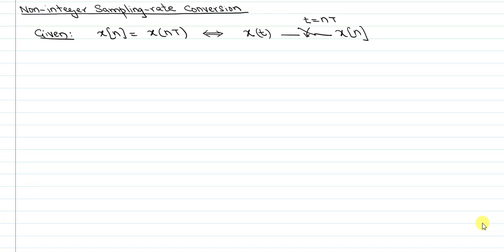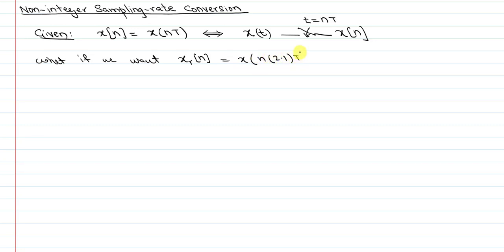In this video, we want to talk about the case of non-integer sampling rate conversion. Let's assume you are given a sequence x(n), which is obtained by sampling a signal. What if we want a new sequence x_r(n) equal to x(n·2.1T)? This is called non-integer sampling rate conversion — the case where we are reducing the sampling rate. We can also increase the sampling rate, where r equals n·T divided by 2.1.